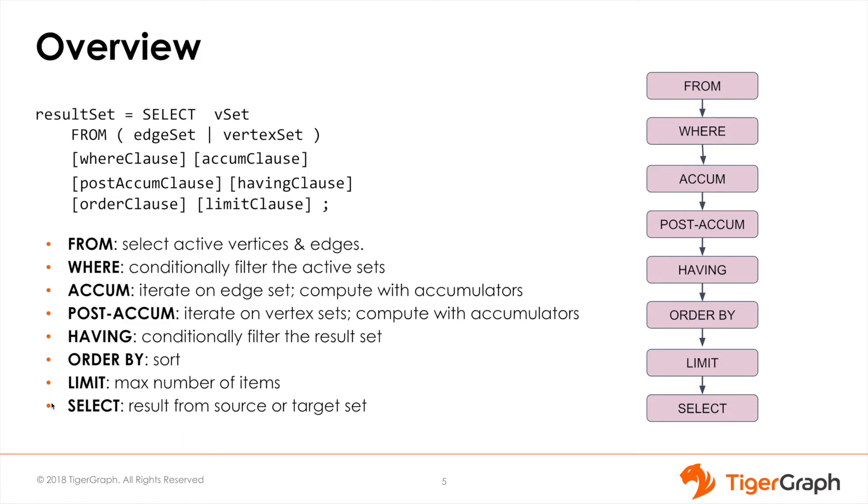On the right hand side you can see the basic diagram of how a query block executes. Each SELECT statement starts from FROM, going through all the optional elements you may or may not include, and ends with SELECT. You may notice that you type SELECT first in a GSQL query, but it executes last.